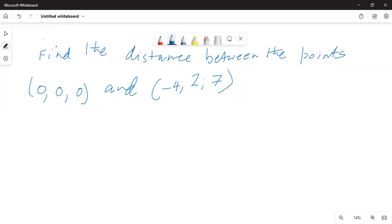So distance is equal to square root of (0 minus minus 4) squared plus (0 minus 2) squared plus (0 minus 7) squared.